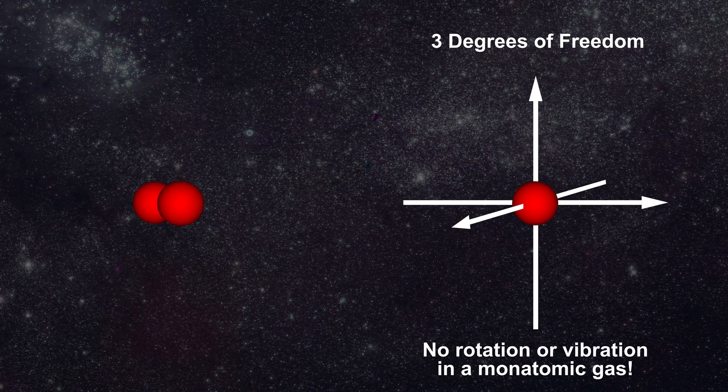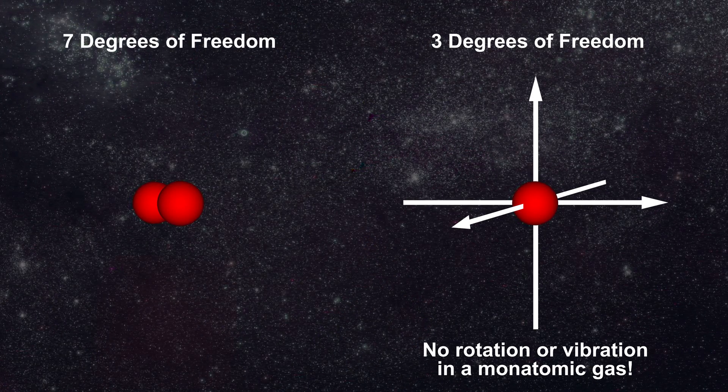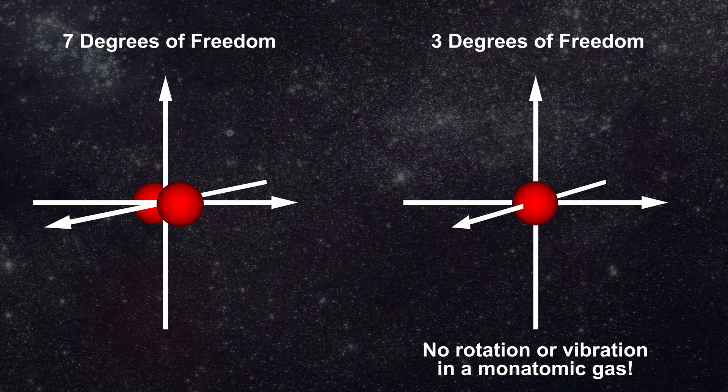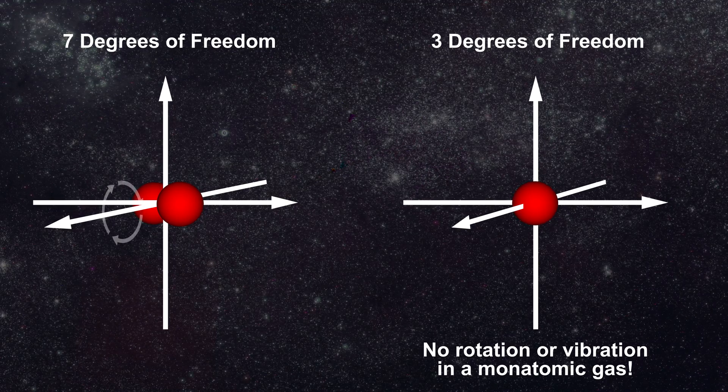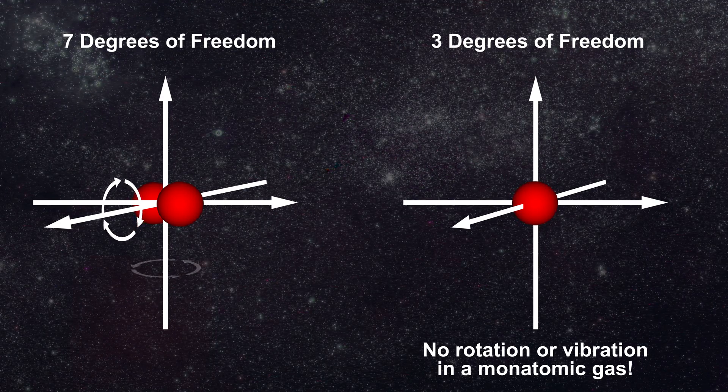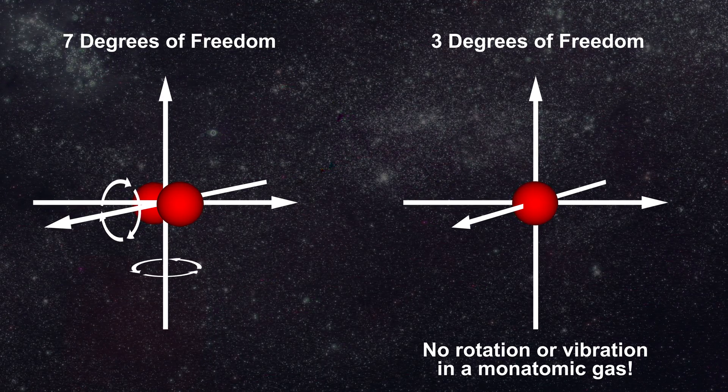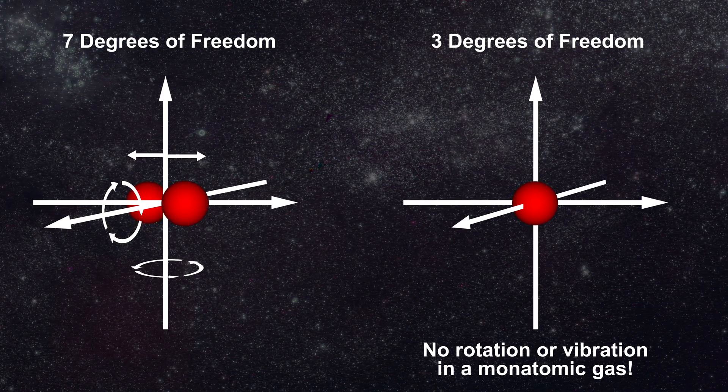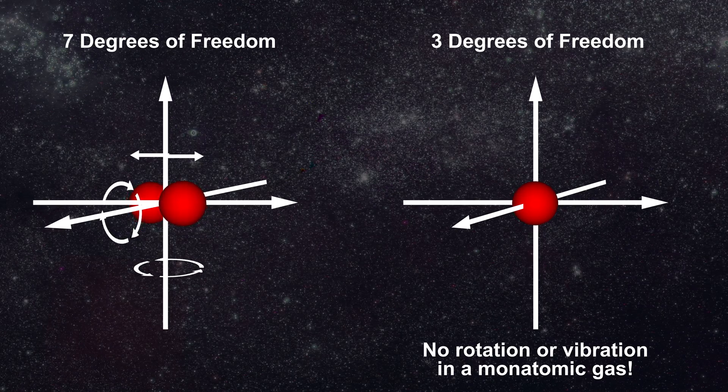A diatomic molecule like hydrogen has seven degrees of freedom: the same three translational degrees of freedom and also two rotational degrees of freedom along the two axes which are orthogonal to its interatomic bond. Finally a diatomic molecule also has two vibrational degrees of freedom which arise from a single vibrational mode.